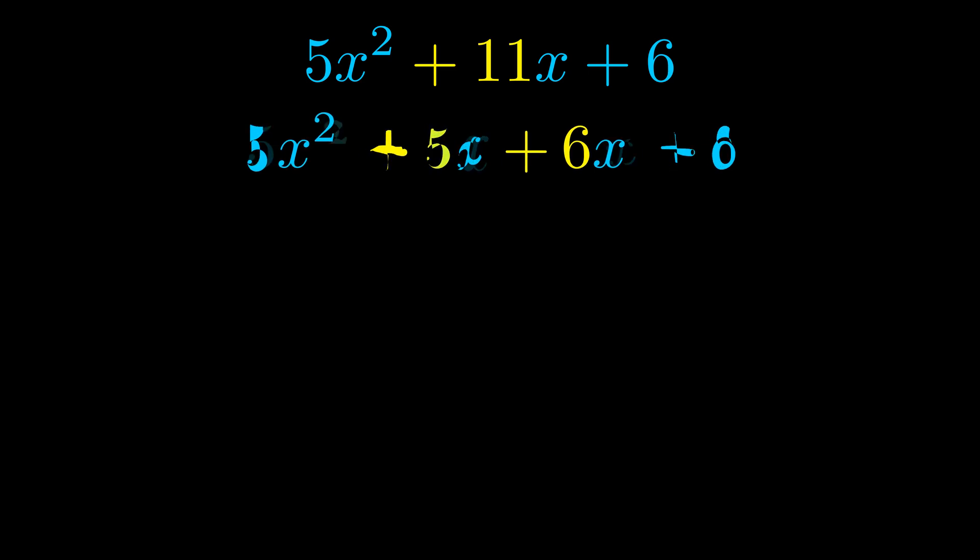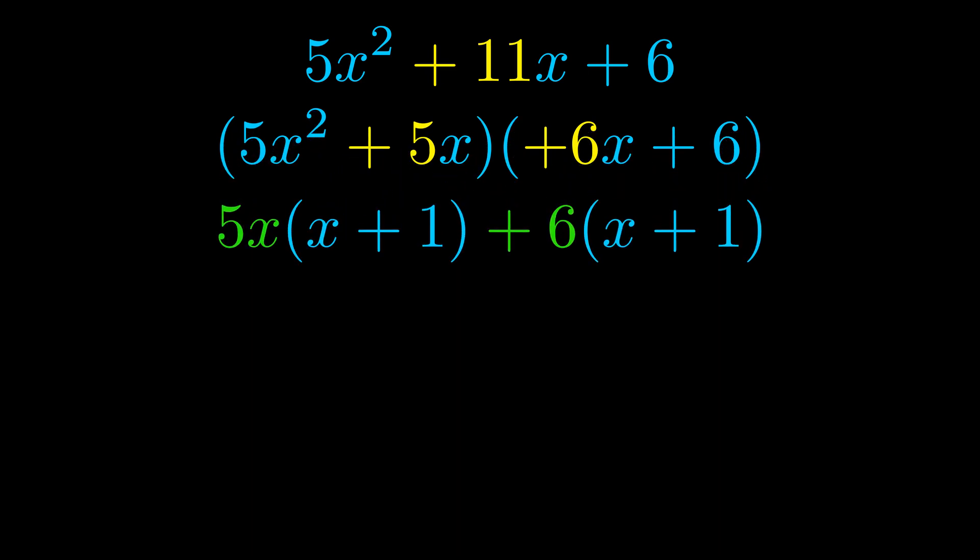Once we've done this, we go ahead and put parentheses around the first term and the last term. And we do that so that we can take the greatest common factor out of both terms. We can see the greatest common factor is now outside in green.